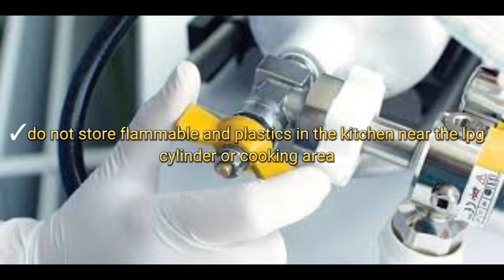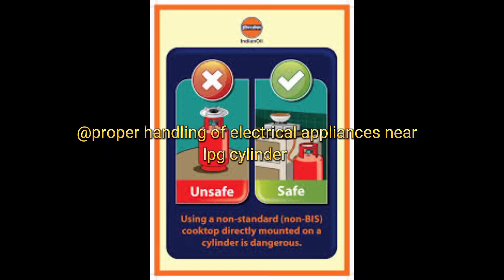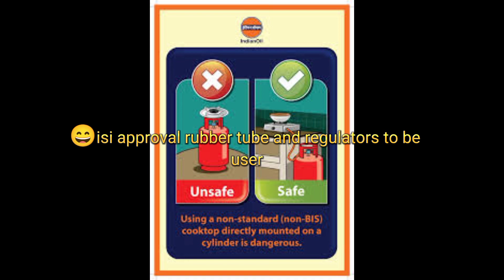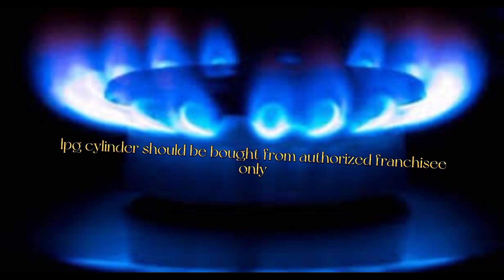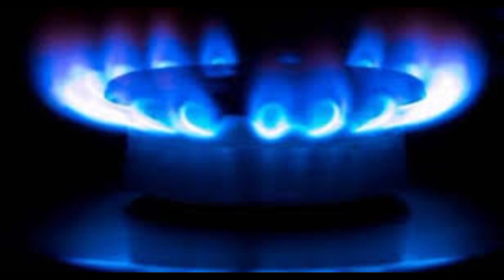Precautions to prevent gas cylinder blasts: always keep the regulator knob in the off position when not in use. Do not store flammable or plastic materials near LPG cylinders. Handle electric appliances properly near cylinders. Ensure the kitchen and cooking area are well ventilated. Use only ISI-approved rubber tubes and regulators, and buy LPG cylinders from authorized franchises only.